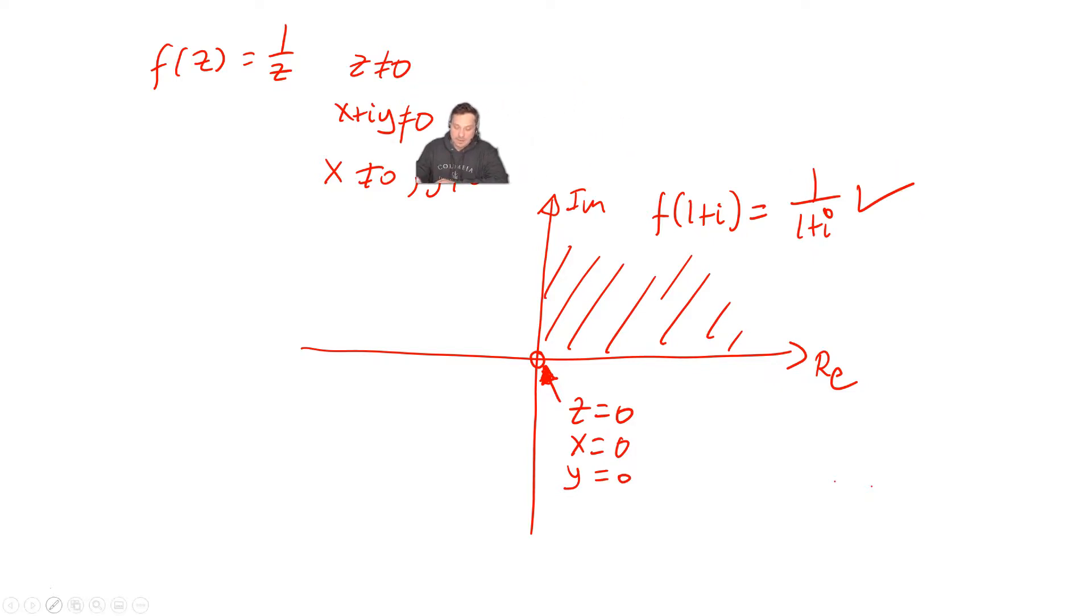Same thing over here. For example, plug in some other point. Maybe say it's -2. You can plug that into the function, no problem. It's 1/(-2). That's what this would look like. That's a defined quantity.